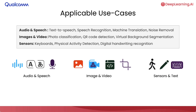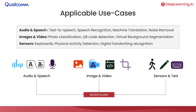Here are a few of the applicable use cases with audio, image, as well as sensors. The popular audio and speech applications include text-to-speech, speech recognition, machine translation, and audio noise removal. When you work with images and videos, you have photo classification, QR code detection, and virtual background segmentation. When you work with sensors, physical activity detection, keyboard models, and digital handwriting recognition are all powered by on-device AI. You can even mix multiple modalities — audio, image, video, speech, and sensors — to produce multi-modal on-device AI models.